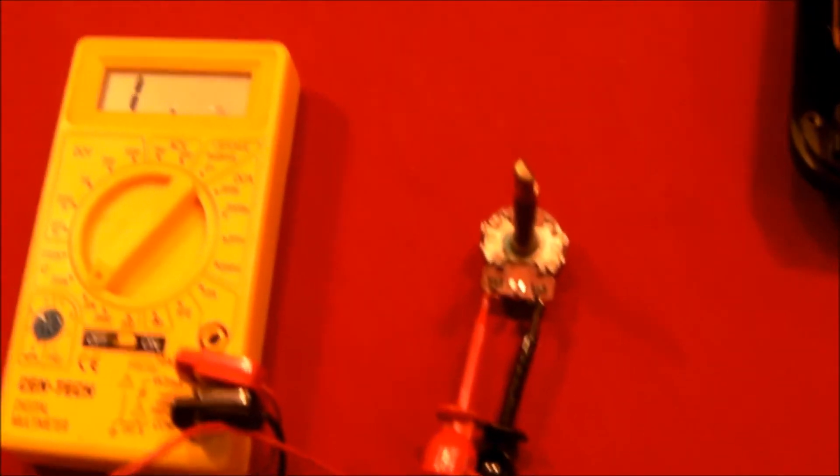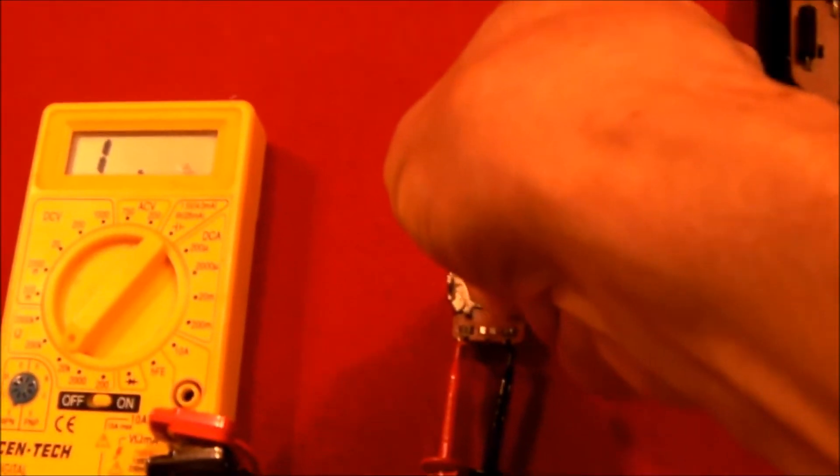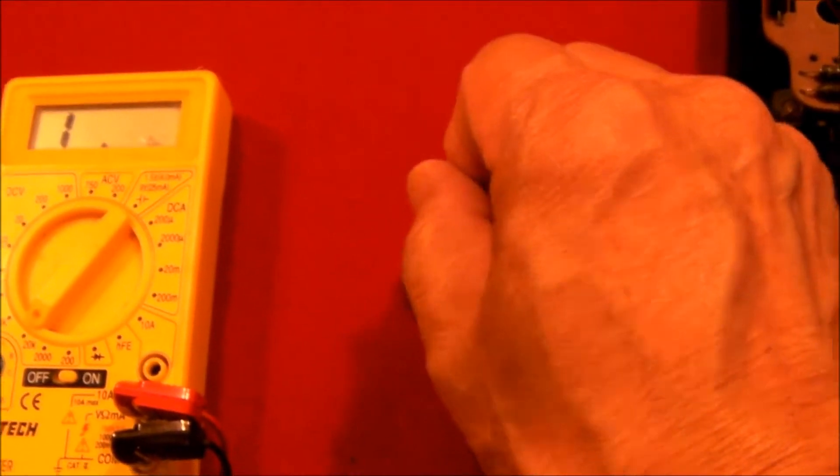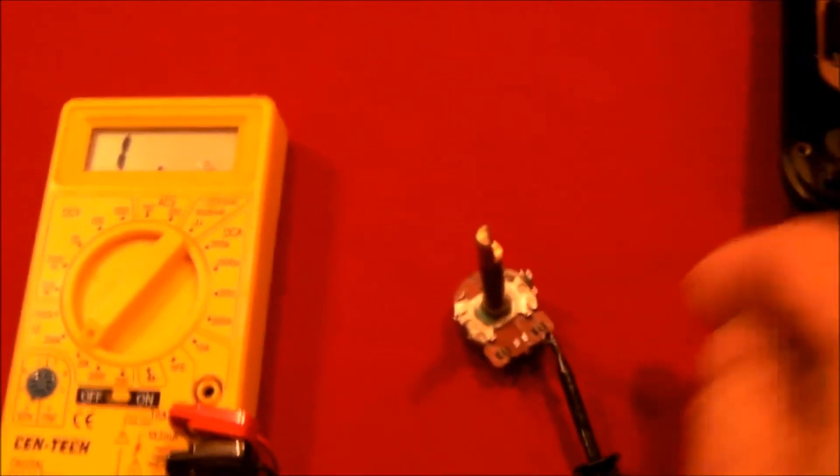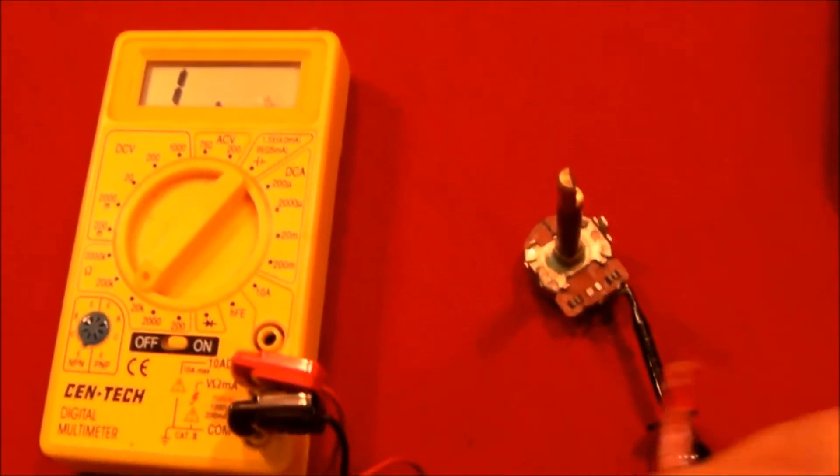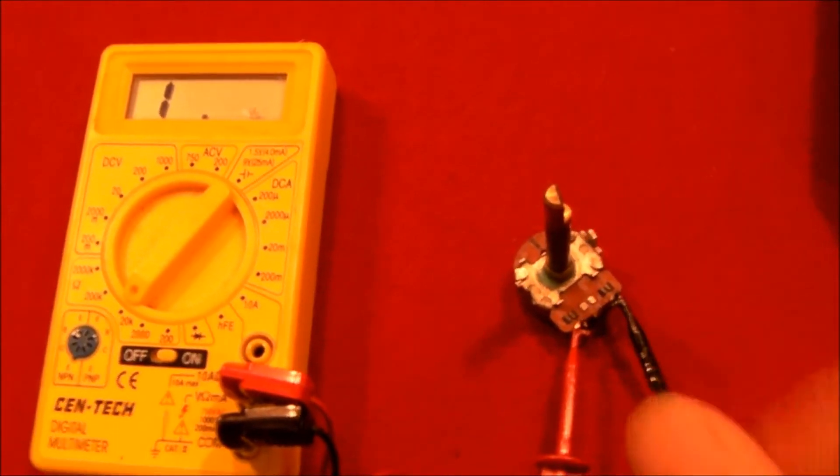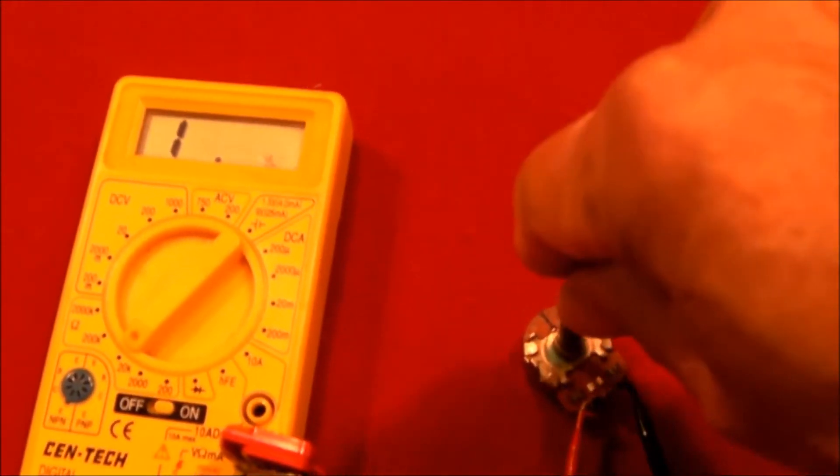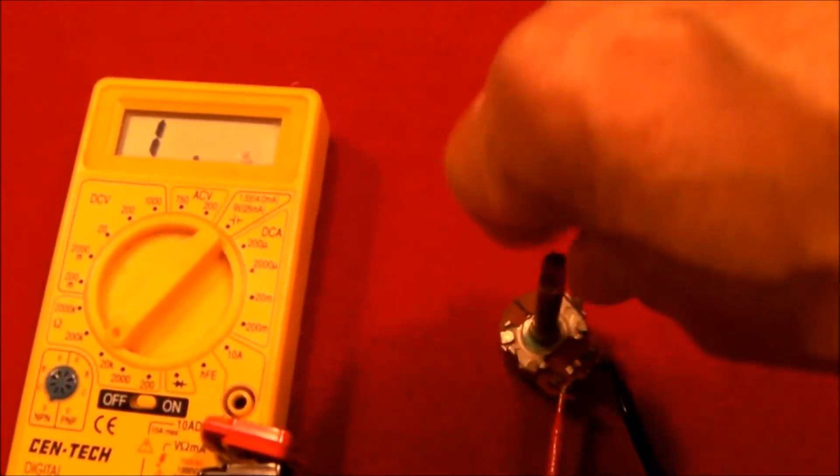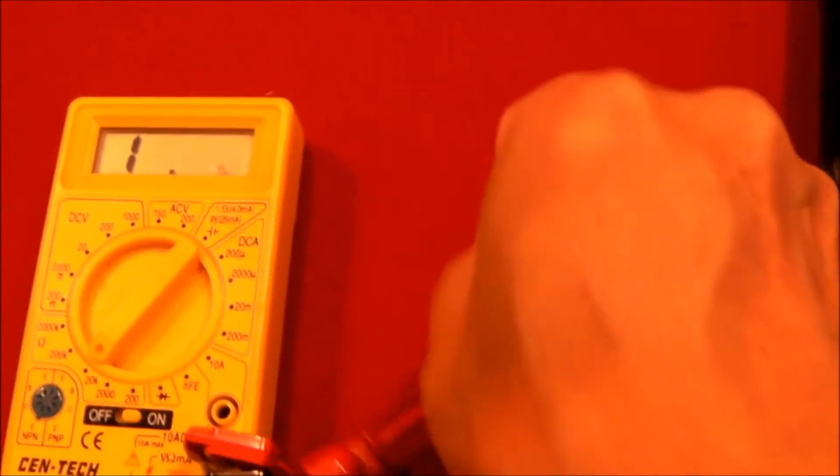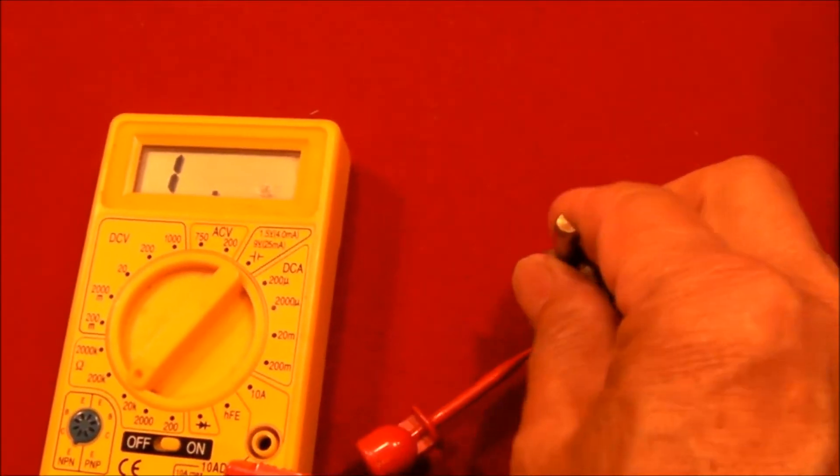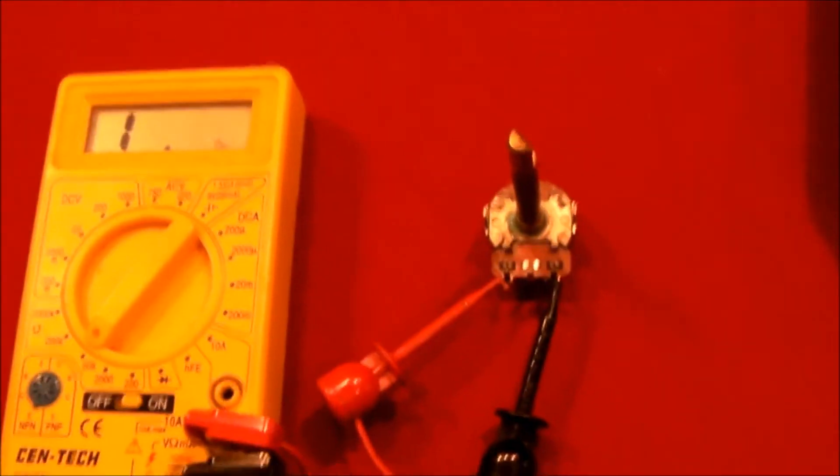Well the first thing I found is that it appears to be open. This is a 10k pot and if I turn it full counterclockwise or full clockwise you can see over here on my digital meter that I have open circuit. So it's open circuit.